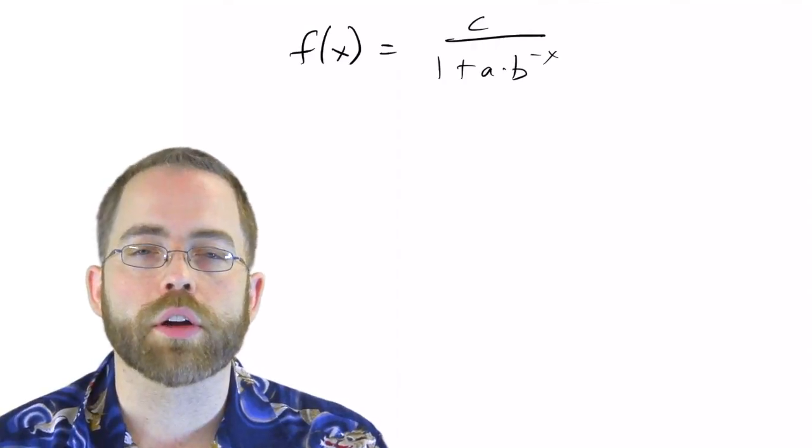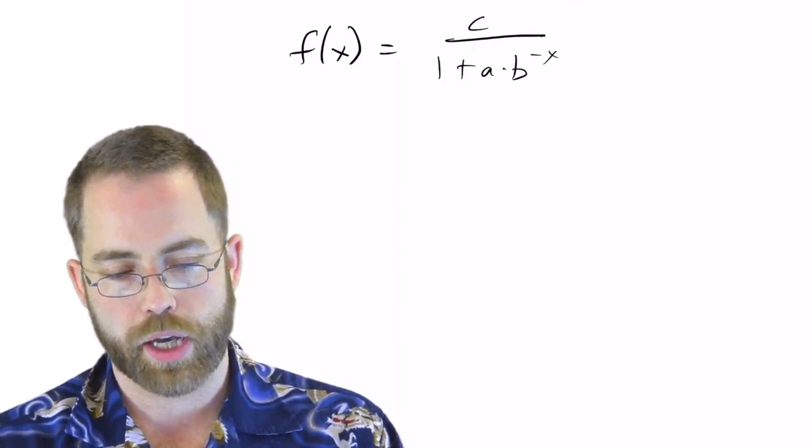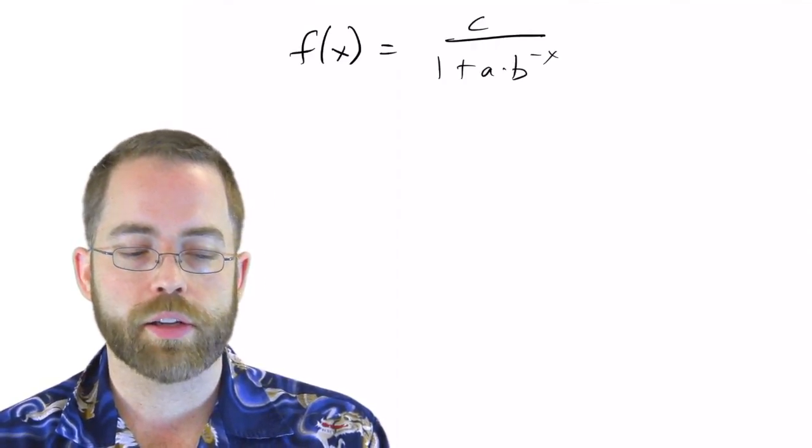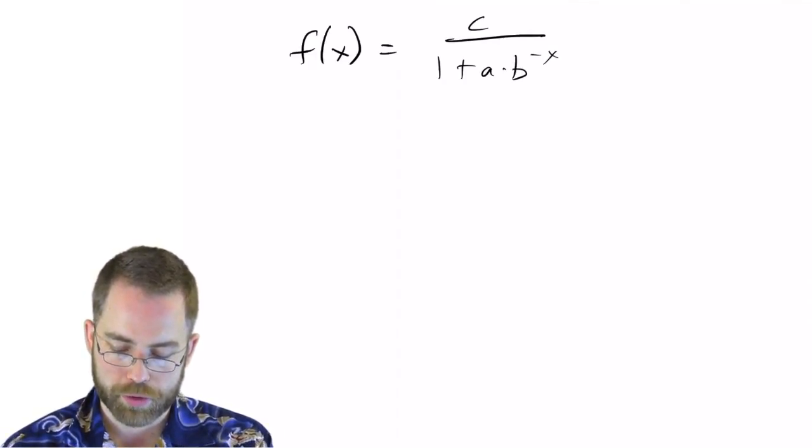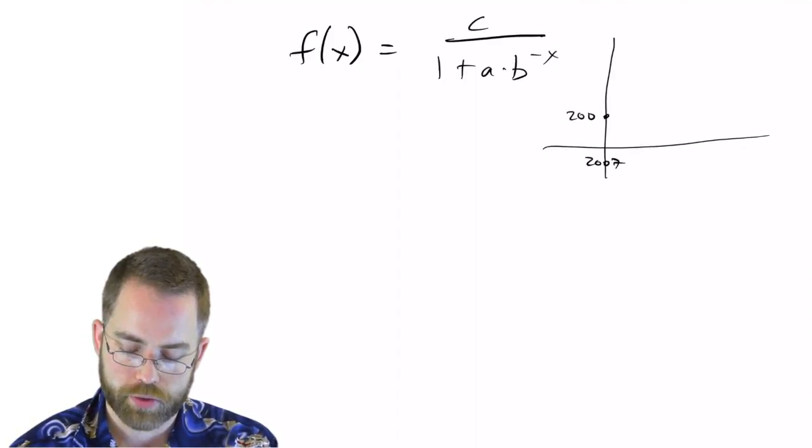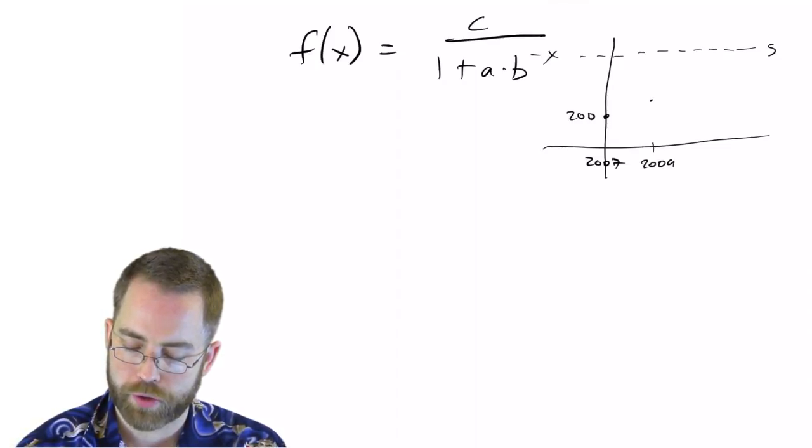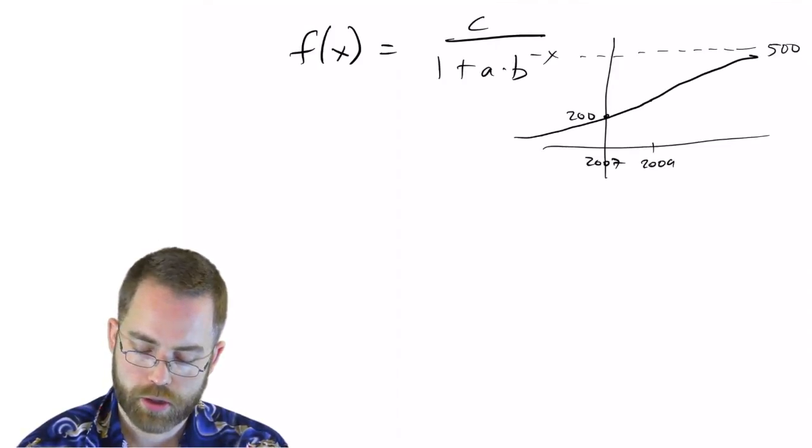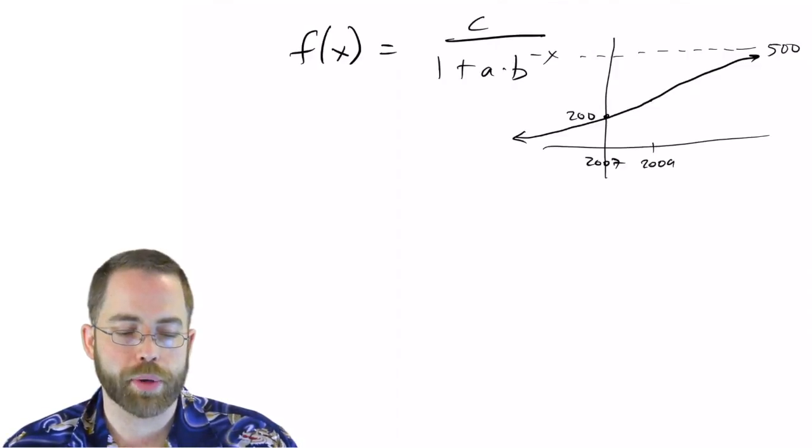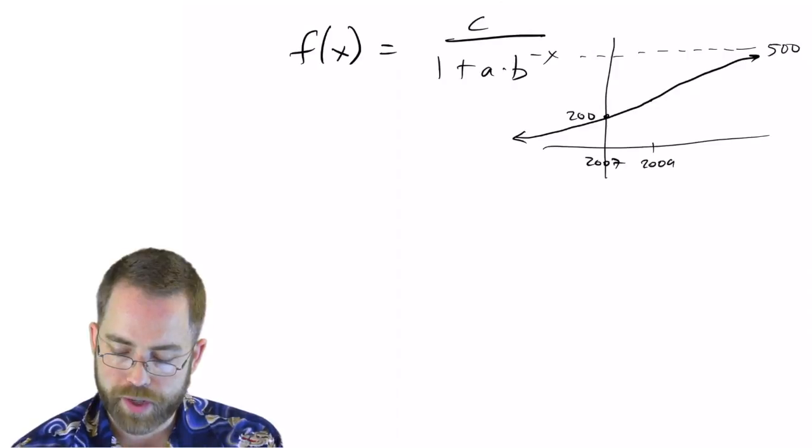So what we're going to say is that we're going to make functions f of x where there's a carrying capacity C divided by 1 plus A times B to the negative x, okay? So let's use that simpler one here on this coyote problem. Okay, at the beginning of 2007, the coyote population in a wilderness area was estimated at 200 coyotes. By the beginning of 2009, the coyote population had increased to 250. A park ranger estimated that the carrying capacity of the wilderness area was 500 coyotes. So you should be able to draw a little sketch for this and say, at the beginning, in 2007, we were at 200 coyotes. By 2009, it had gone up to 250, and we expect a maximum of 500. So that would mean that we would go in this sort of S-shaped kind of curve like that. All right, use the given data to determine the growth rate constant for the logistic model of this coyote population. Use the logistic model to determine and predict the year in which the coyote population will first reach 400.